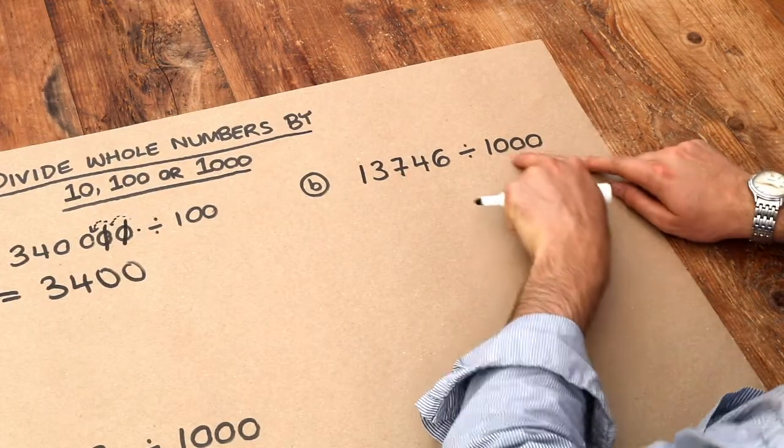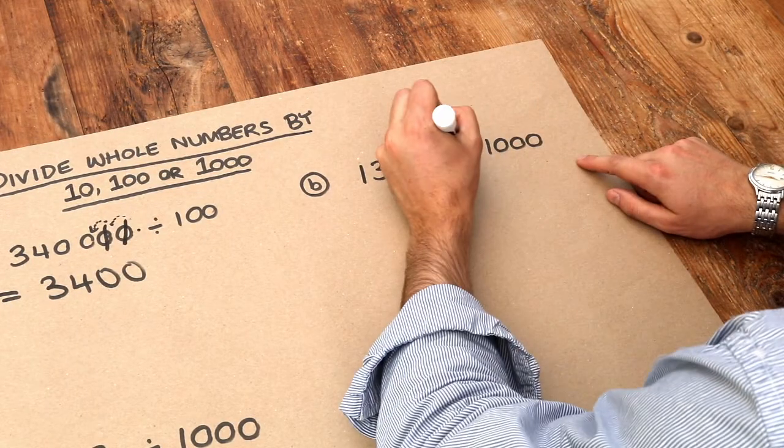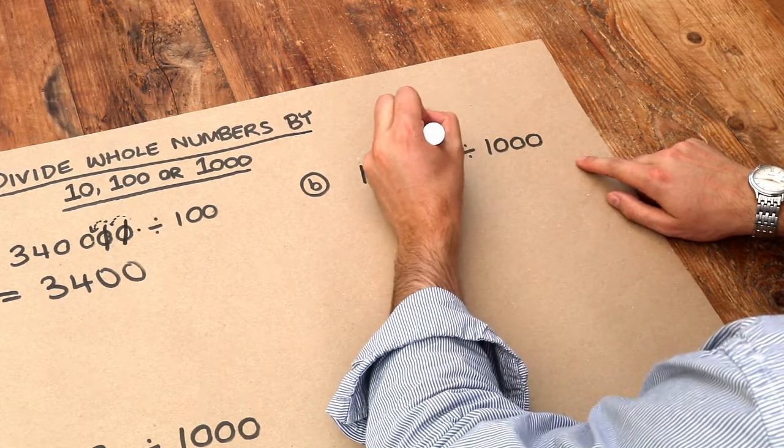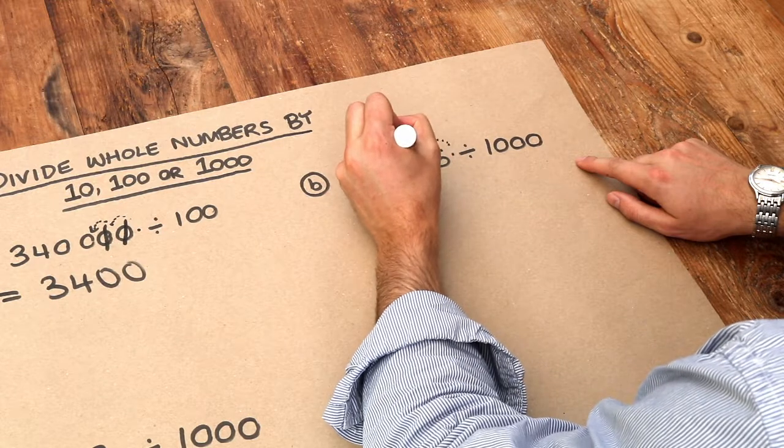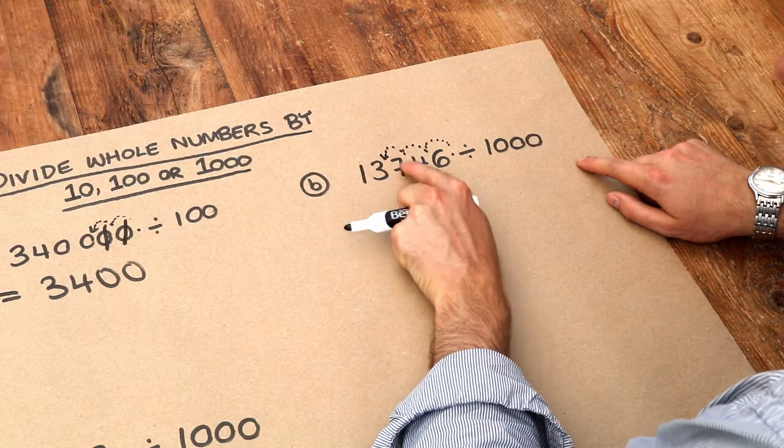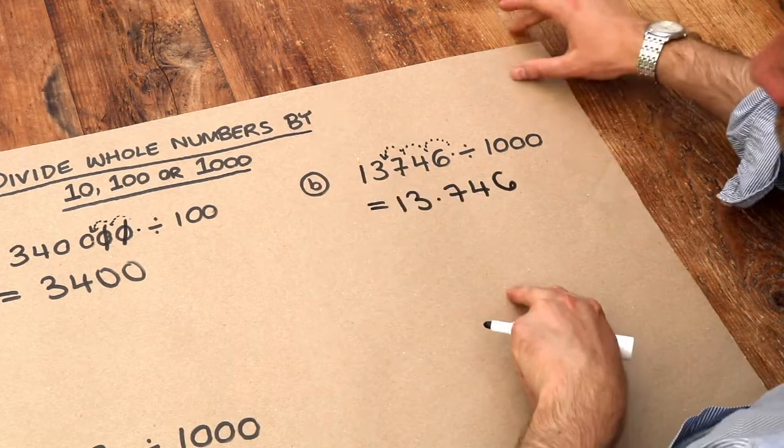We're dividing by 1000. There are three zeros there, so our decimal point is going to move three places to the left. If we do that—one, two, three—that gives us 13.746. And finally, this one.